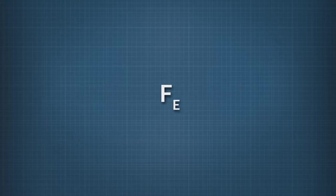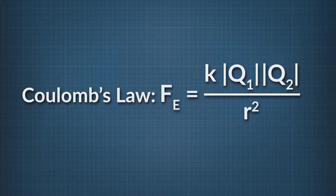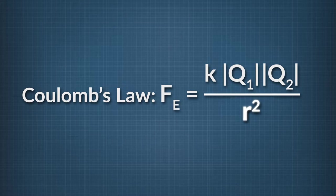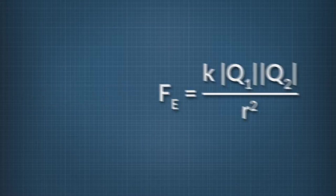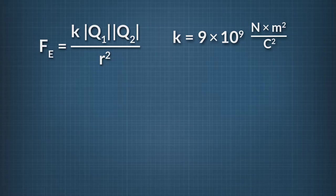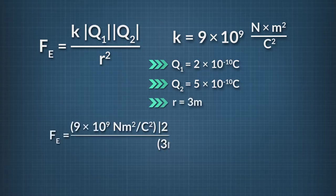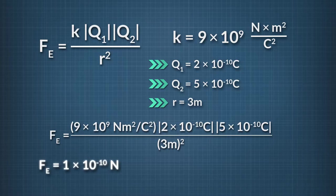Now what about force? Let's use Coulomb's law and see what we find. The electric force between Q1 and Q2 equals K times the absolute value of Q1 times the absolute value of Q2 divided by the distance between them squared. The electric constant K is always 9 times 10 to the 9th Newton meter squared by Coulomb squared. Q1 is equal to 2 times 10 to the negative 10 Coulombs, and Q2 is equal to 5 times 10 to the negative 10 Coulombs, and R is 3 meters. When we plug these numbers into the equation for electric force, we find that it is equal to 1 times 10 to the negative 10 Newtons.